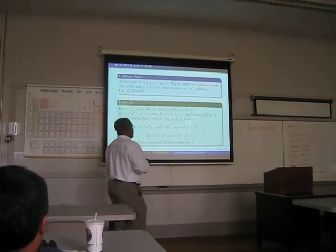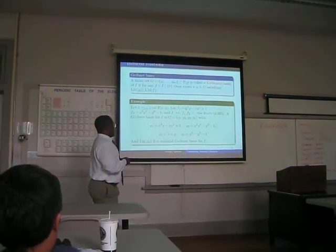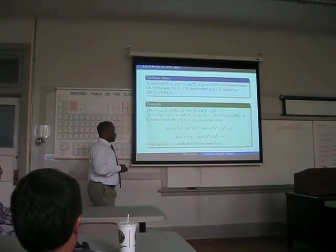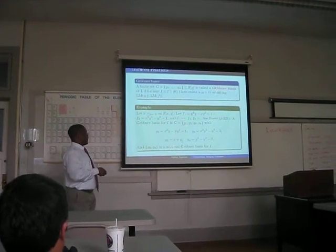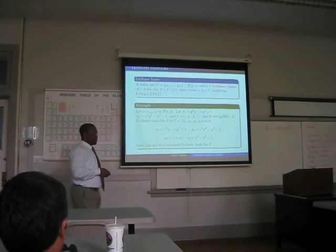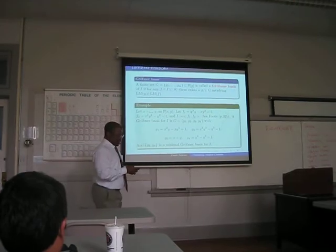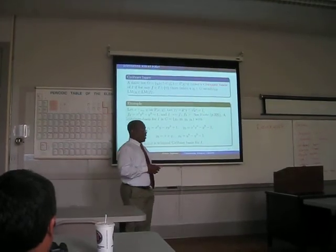So our ideal i is the one generated by f1 and f2, and they say G consists of G1 through G4, where they find like that. And the form is...